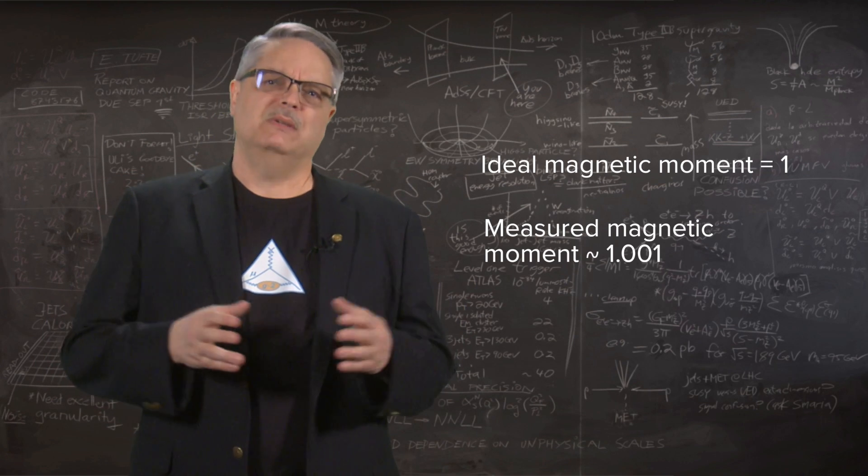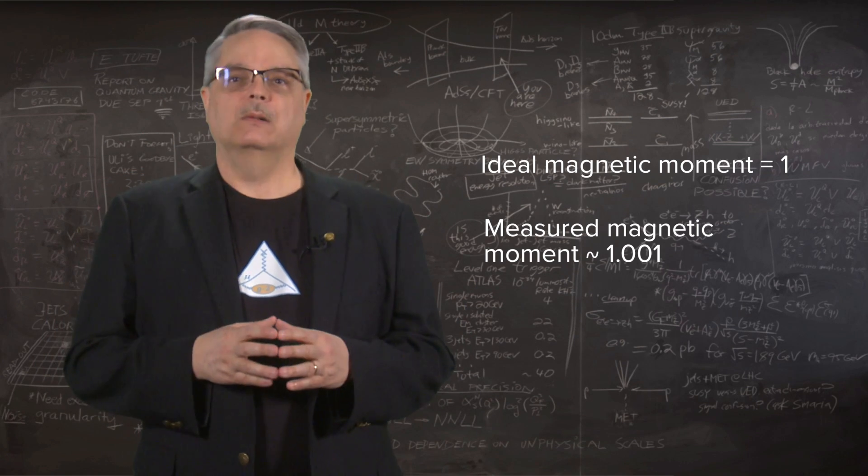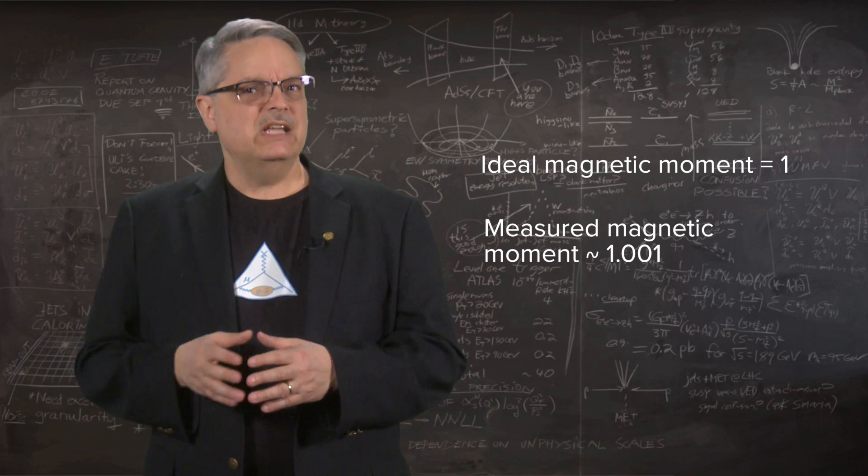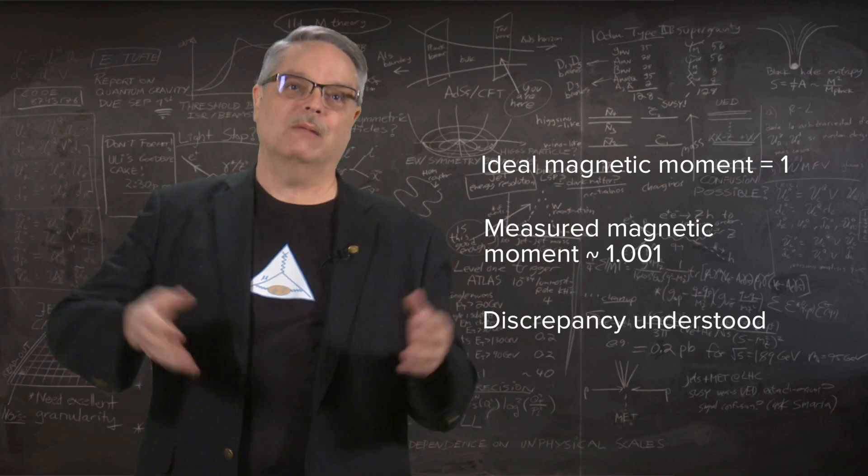That turns out to not be a big deal, as the muon isn't an ideal particle. That small deviation is predicted by the theory of QED, so no problem.